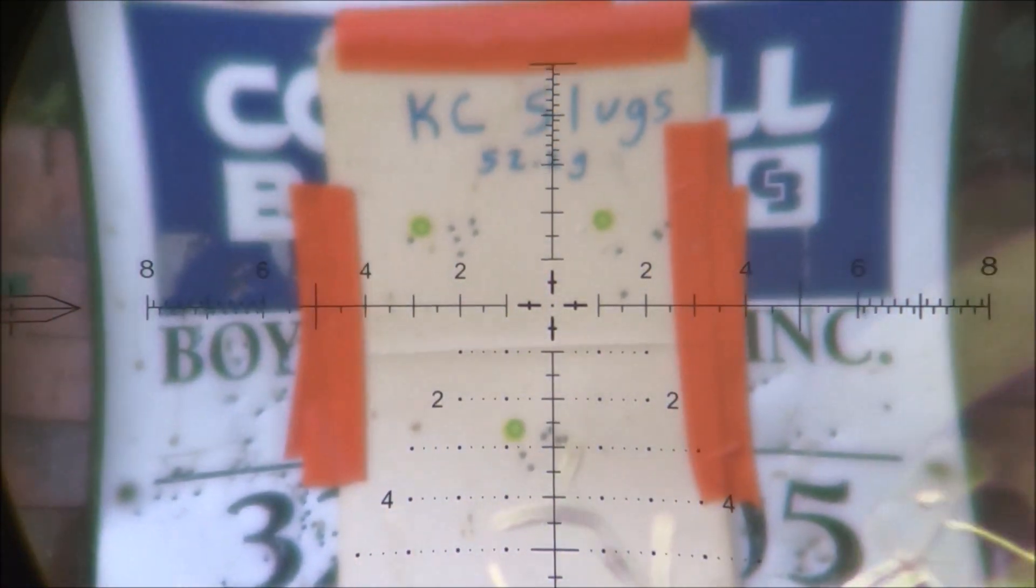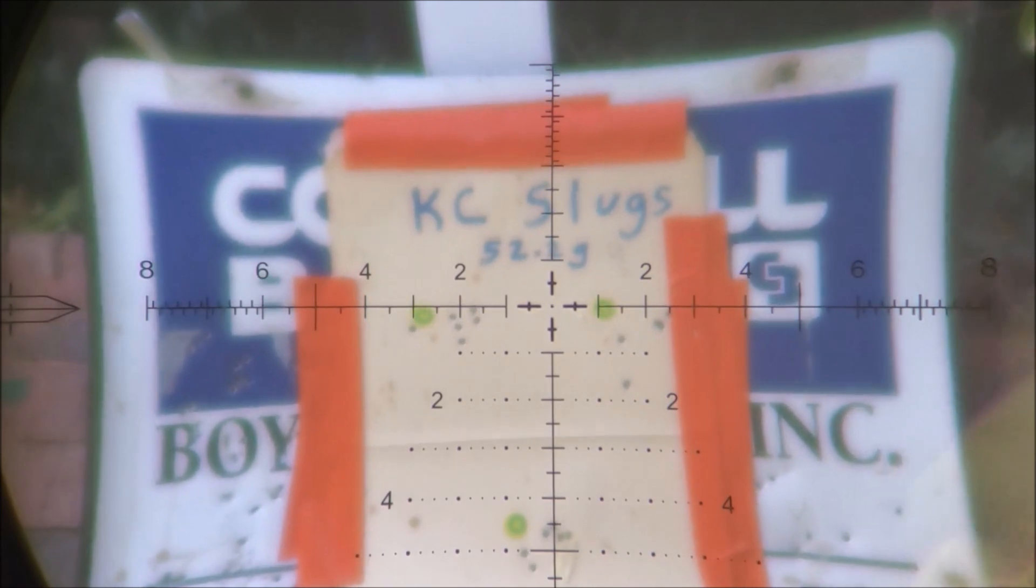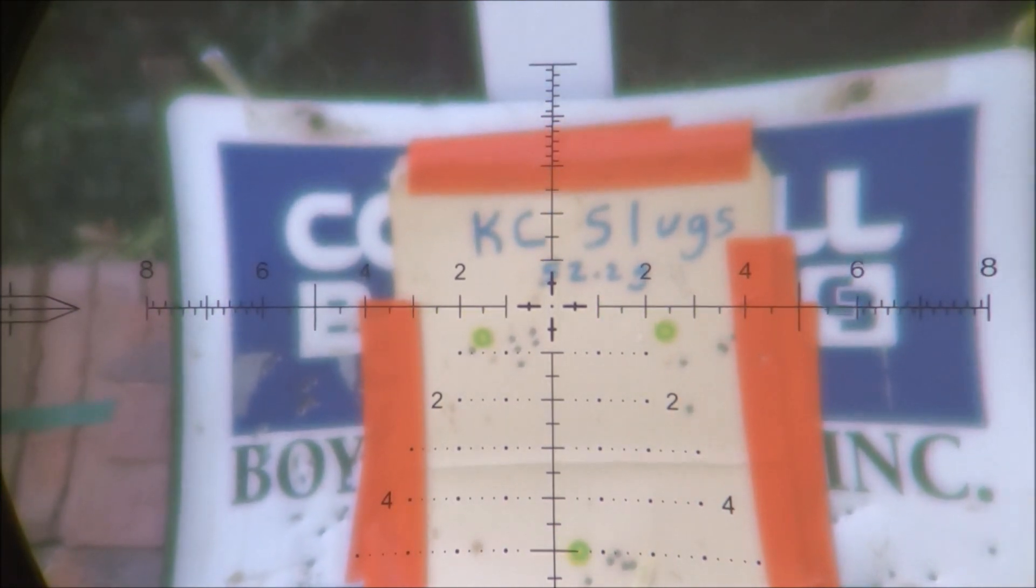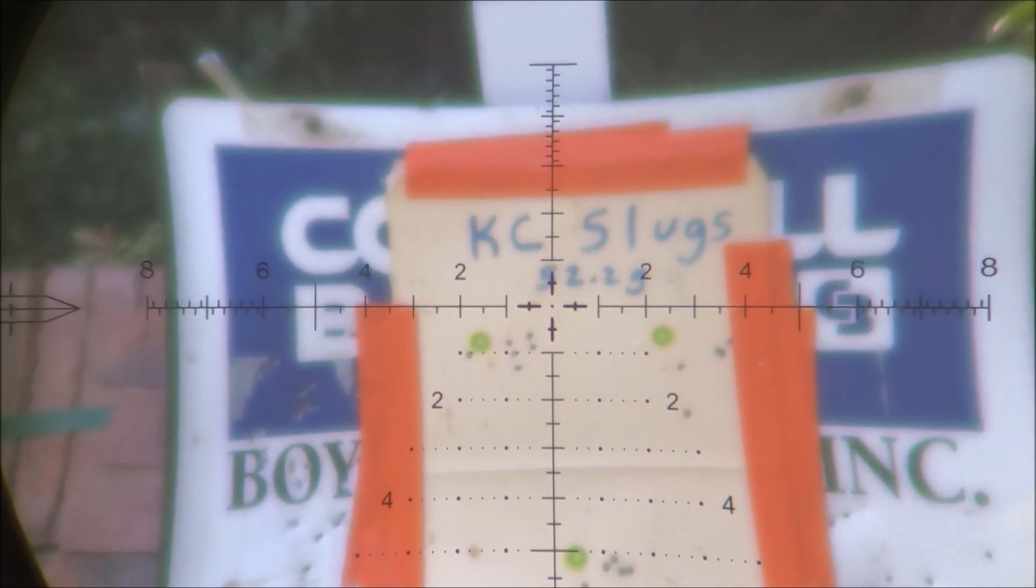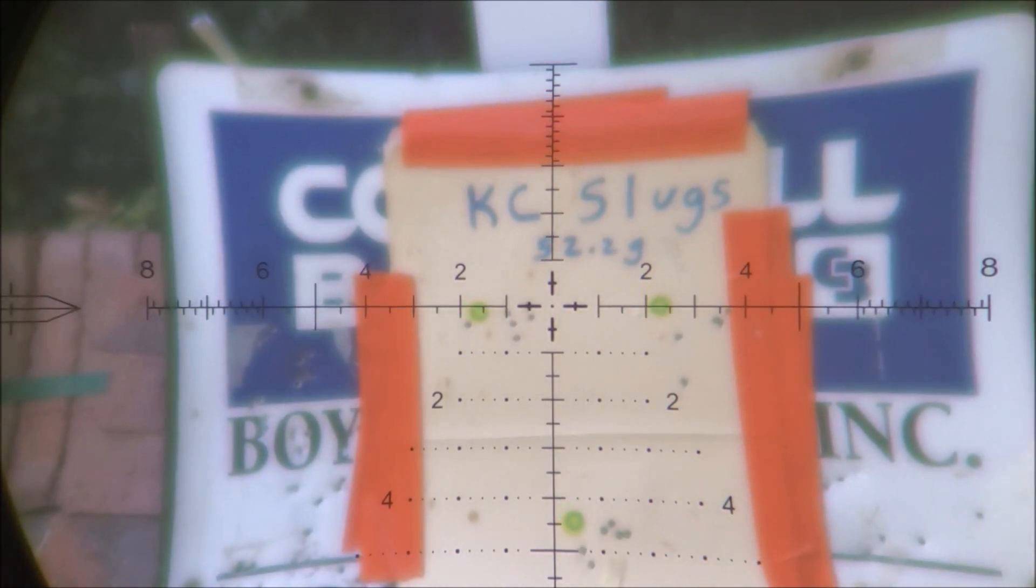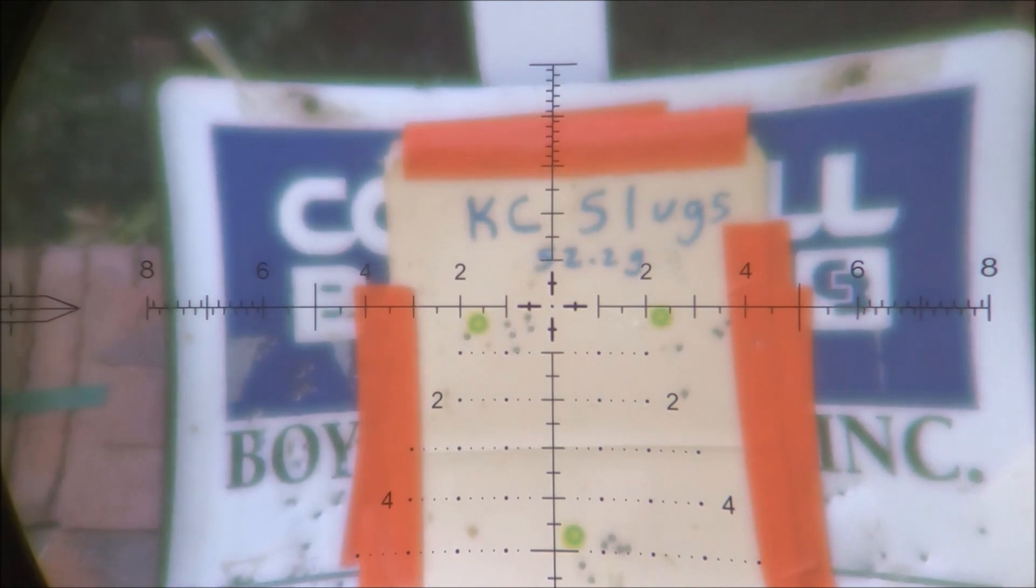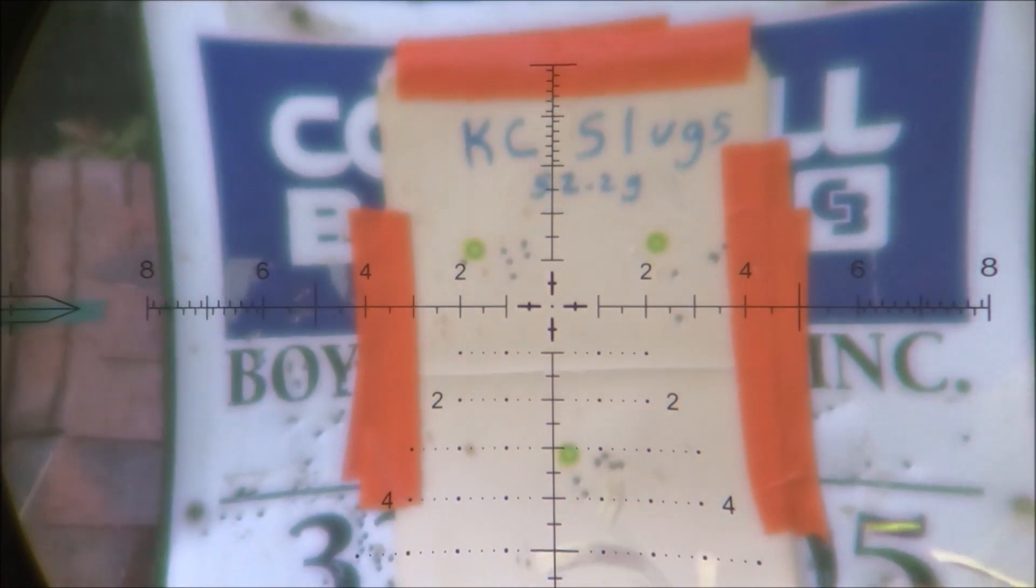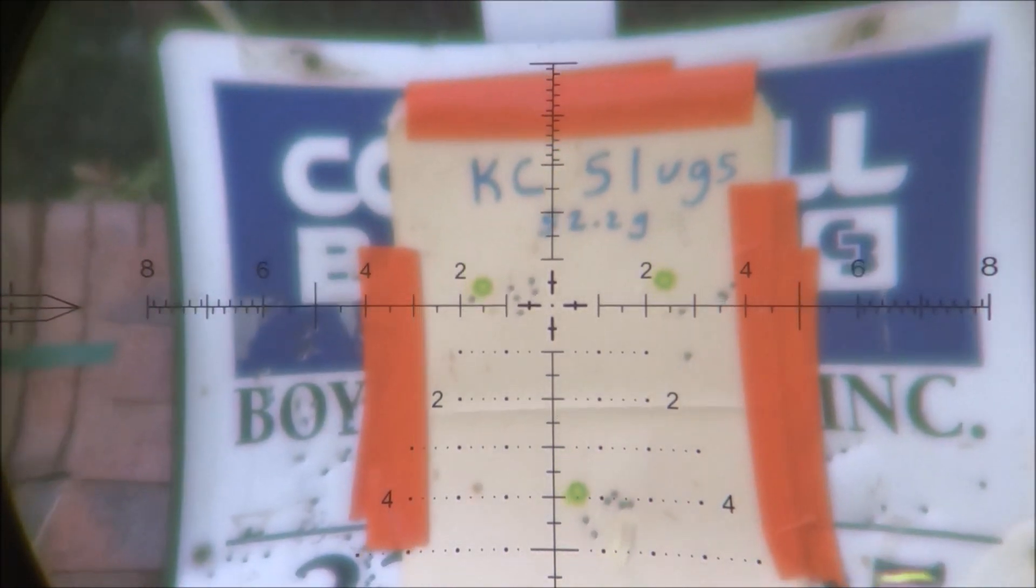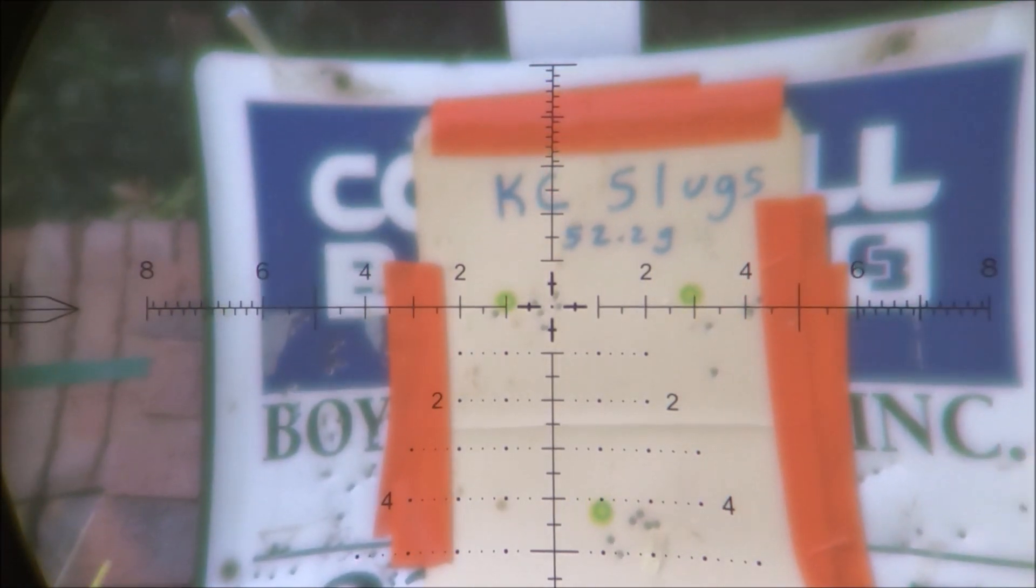Alright guys, this has been the KC slug 52.2. Like I said, this is out of a pellet liner, the Superior liner, 700 millimeter. Andrew Kleinfelter is who you can contact on Facebook. I will be doing some more of his slugs. He sent me some sample slugs, so we'll see which ones my gun likes the best, and that's the ones I will be ordering some more of. Alright guys, y'all have a nice day.